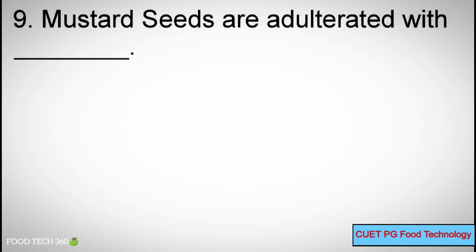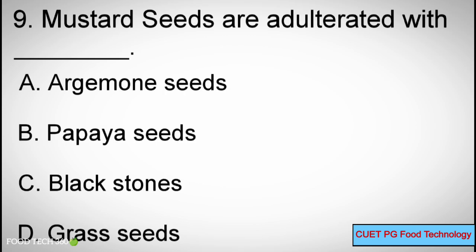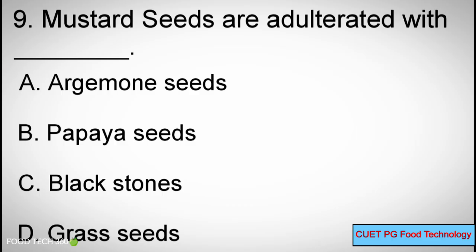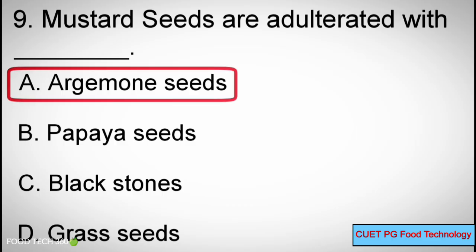Q9: Mustard seeds are adulterated with? A. Argemone seeds, B. Papaya seeds, C. Blackstones, D. Grass seeds. Correct answer: A. Argemone seeds.